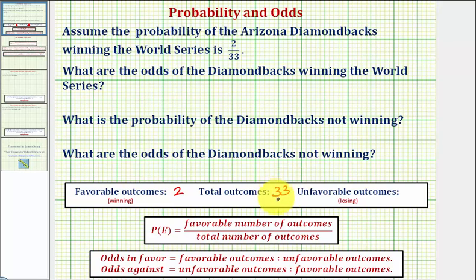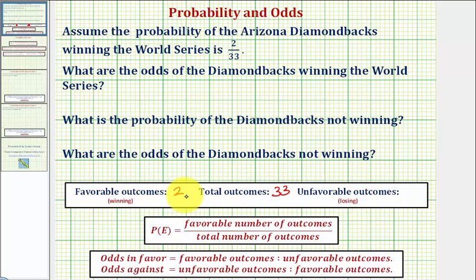From this we can also determine the number of unfavorable outcomes out of a total of 33 outcomes. There would have to be 33 minus two, or 31 unfavorable outcomes — 31 chances the Diamondbacks would lose the World Series out of 33 chances.